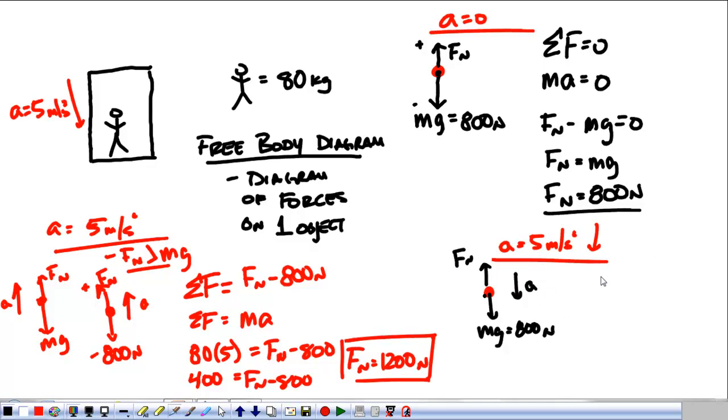We're going to go through this again in the same way. The sum of my forces equals my acceleration is down now. What we're going to do is every time we write out mA, we're going to assume that the acceleration is positive. That means that whatever is with the acceleration is positive. Whatever is against it is negative.